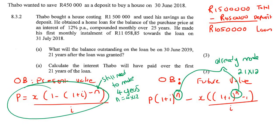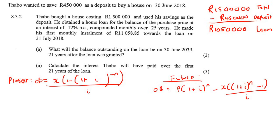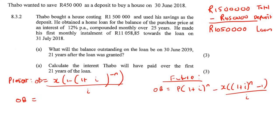I'll go with the present value method — it's a little bit easier with not as much work. Remember, P in the Grade 11 formula is the starting amount of the loan. For the loan, his monthly installment is R11,058.85 and the interest rate for this compounding is 12%. For the present value method, the N is the payments still needed — 4 years remaining, so N = 4 × 12 (negative exponent), divided by 0.12 over 12.